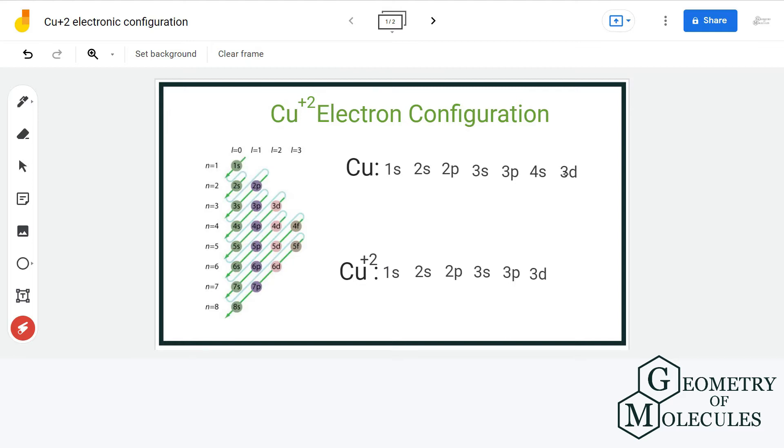If we follow the Aufbau principle of filling the electrons, the electronic configuration of copper will be 1s2, 2s2, 2p6, 3s2, 3p6, 4s2, 3d9.